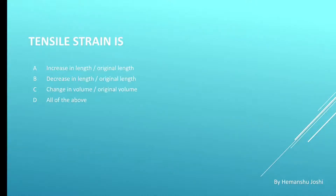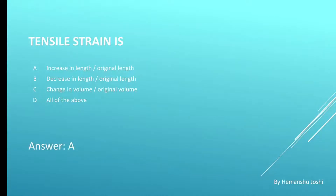Next question. Tensile strain is: options are A. Increase in length by original length, B. Decrease in length by original length, C. Change in volume by original volume, and D. All of the above. Correct answer is A. Increase in length by original length.